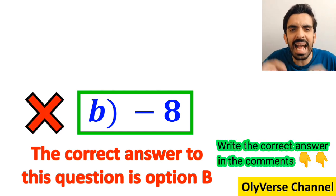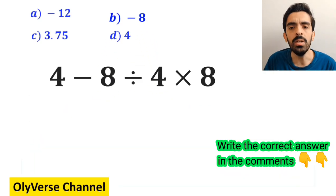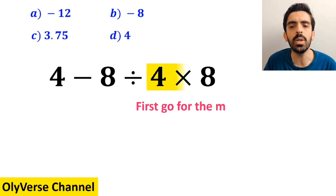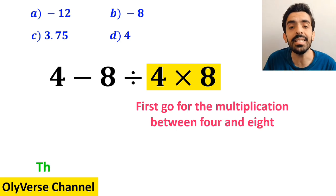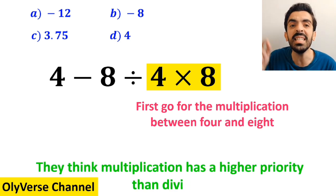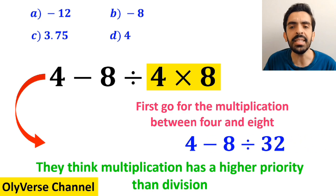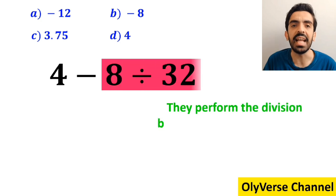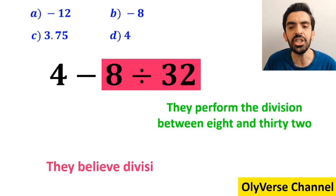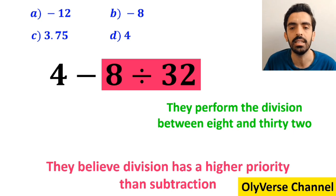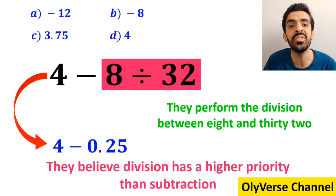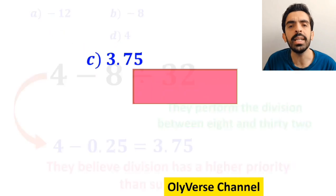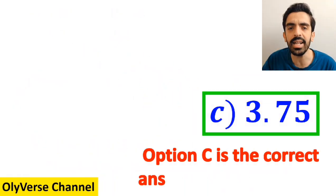However, this answer is actually incorrect. Also, some other people to solve this question first go for the multiplication between 4 and 8 because they think multiplication has a higher priority than division. So they rewrite this expression as 4 minus 8 divided by 32. In the next step, they perform the division between 8 and 32 since they believe division has a higher priority than subtraction. And they simplify this expression to 4 minus 0.25, which finally gives them the answer 3.75. Then, without any hesitation, they quickly say that option C is the correct answer to this question.